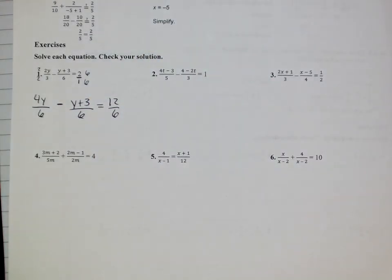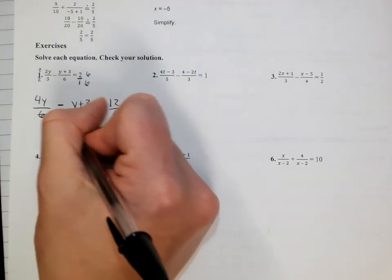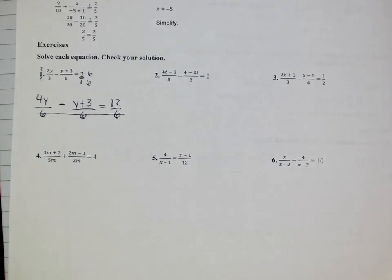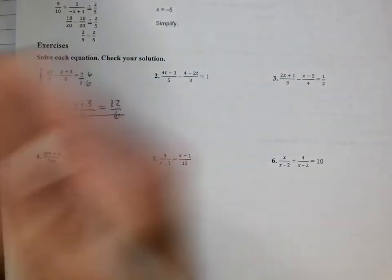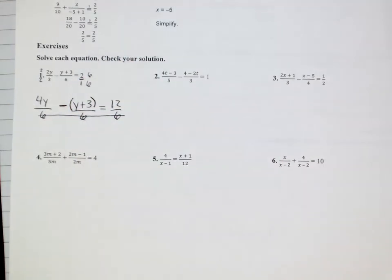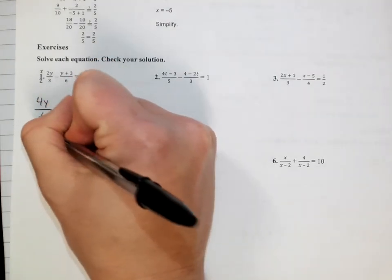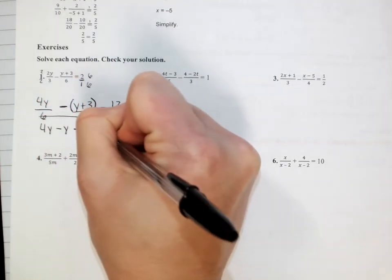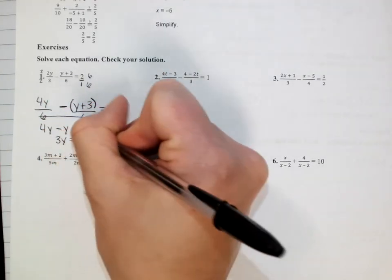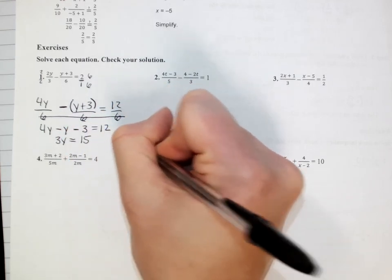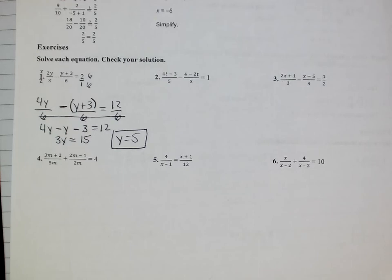that's going to be 4y over 6 minus y plus 3 over 6 equals 12 over 6. Once you get the denominators the same, this is my favorite part of this, you get to completely ignore them, as long as there's not an x in there. And then just solve the top. So the one thing to watch out for here is this minus sign in between. You have to remember that that minus sign actually distributes through the whole numerator of that fraction. When I do that to simplify this, that's just 4y minus y minus 3 equals 12. When I simplify this, this is 3y, and if I add that 3 to the other side equals 15, so y equals 5.